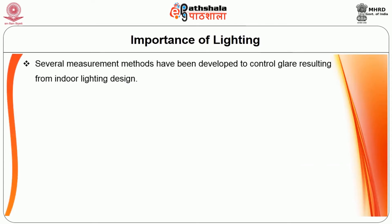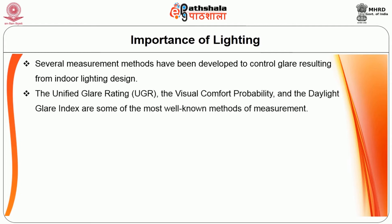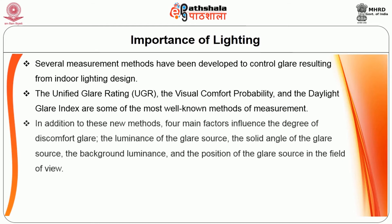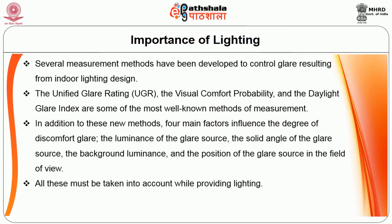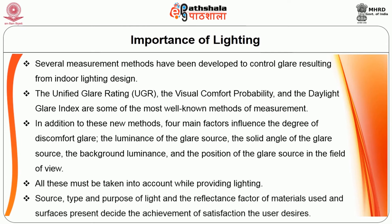Several measurement methods have been developed to control glare resulting from indoor lighting design. The Unified Glare Rating (UGR), the Visual Comfort Probability, and the Daylight Glare Index are some of the most well-known methods. In addition, four main factors influence the degree of discomfort glare: the luminance of the glare source, the solid angle of the glare source, the background luminance, and the position of the glare source in the field of view. All these must be taken into account. Source, type and purpose of light, and the reflectance factor of materials and surfaces present, decide the satisfaction the user desires.